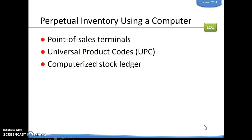Perpetual inventory is often managed by a computer. Technology has made it very easy to keep track of inventory. A point-of-sale terminal is more than just a cash register — it is a computer system that keeps track of what we are selling. To do that, they use UPC codes, universal product codes. That's essentially a computerized stock ledger where everything is computerized for those stock records.